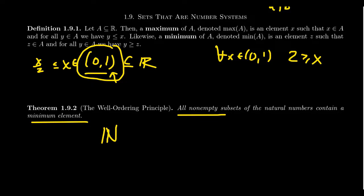For any collection of natural numbers, you're guaranteed a minimum element. I mentioned the well-ordering principle in comparison to these other examples because for typical sets of real numbers, minimum elements are not guaranteed. But for a set of natural numbers, you always have a minimum element — there's always a smallest natural number inside of it. And the well-ordering principle is logically equivalent to the induction principles we're going to talk about later in this unit, which is why we begin with it.